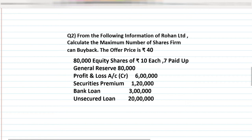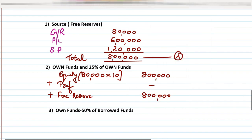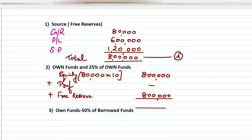Now for own funds: we consider fully paid up equity shares — 80,000 multiplied by face value 10 (do not use 7 here, because we take the fully paid up value) — that gives 8 lakhs. Preference shares are not in this question, so that is a dash. Free reserves total is 8 lakhs. Adding 8 lakhs and 8 lakhs gives us 16 lakhs as own funds.